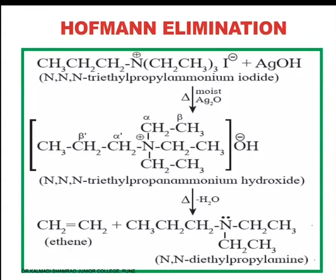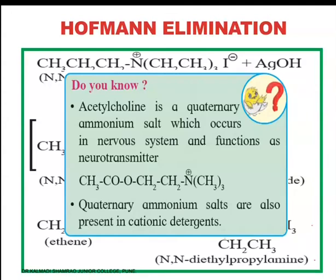The Hoffman elimination reaction is as follows: NNN-triethylpropane ammonium iodide on reaction with moist silver oxide undergoes substitution of I⁻ by OH⁻. This NNN-triethylpropane ammonium hydroxide on strong heating gives selective formation of ethene along with NNN-triethylamine — one of the ethyl branches attached to the nitrogen atom is converted into ethene, which is the least substituted alkene. Note that acetylcholine is a quaternary ammonium salt that occurs in the nervous system and functions as a neurotransmitter. Quaternary ammonium salts are also present in cationic detergents.